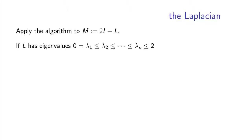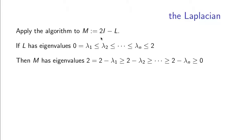If we want to compute the second smallest eigenvalue of the Laplacian, we apply the algorithm that computes the second largest eigenvalue to the matrix 2 times the identity minus the Laplacian. If lambda_1 through lambda_n are the eigenvalues of the Laplacian, then the eigenvalues of 2I minus L are the same eigenvalues except every eigenvalue lambda becomes 2 minus lambda. So the largest eigenvalue of m is 2 minus lambda_1, which is 2, and the second largest is 2 minus lambda_2. The matrix m is still positive semidefinite because the smallest eigenvalue is 2 minus lambda_n, which is greater than or equal to 0. So finding an approximation of the second largest eigenvalue of m gives an approximation of 2 minus lambda_2.